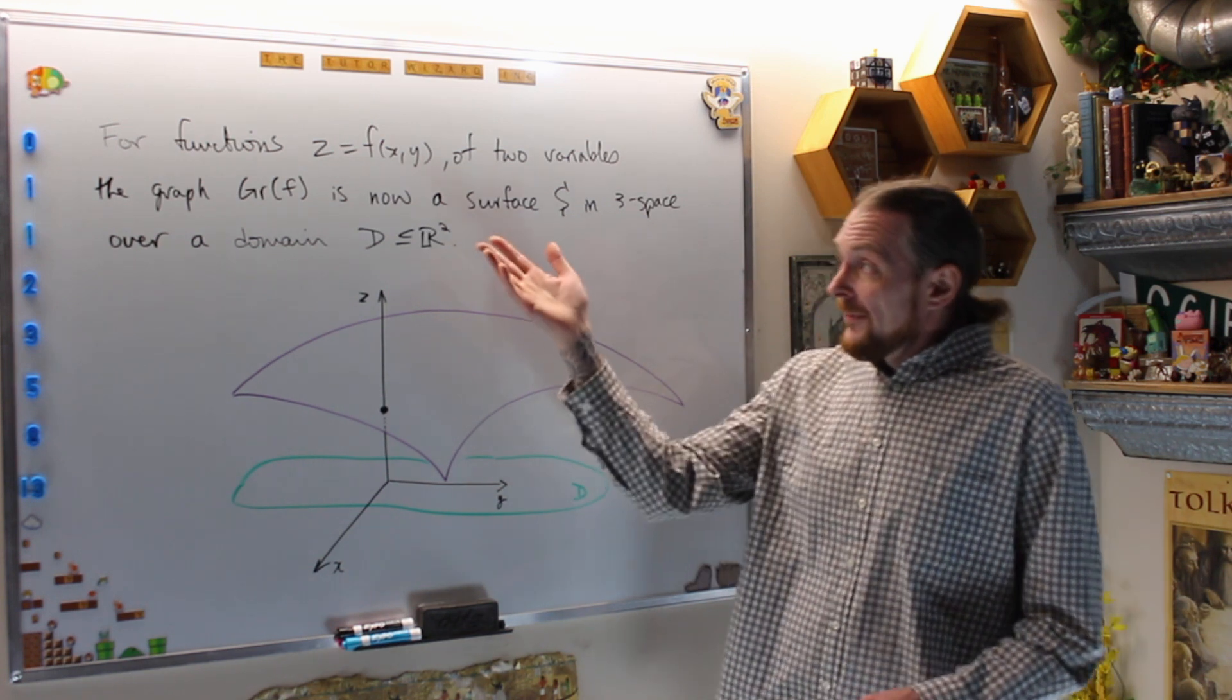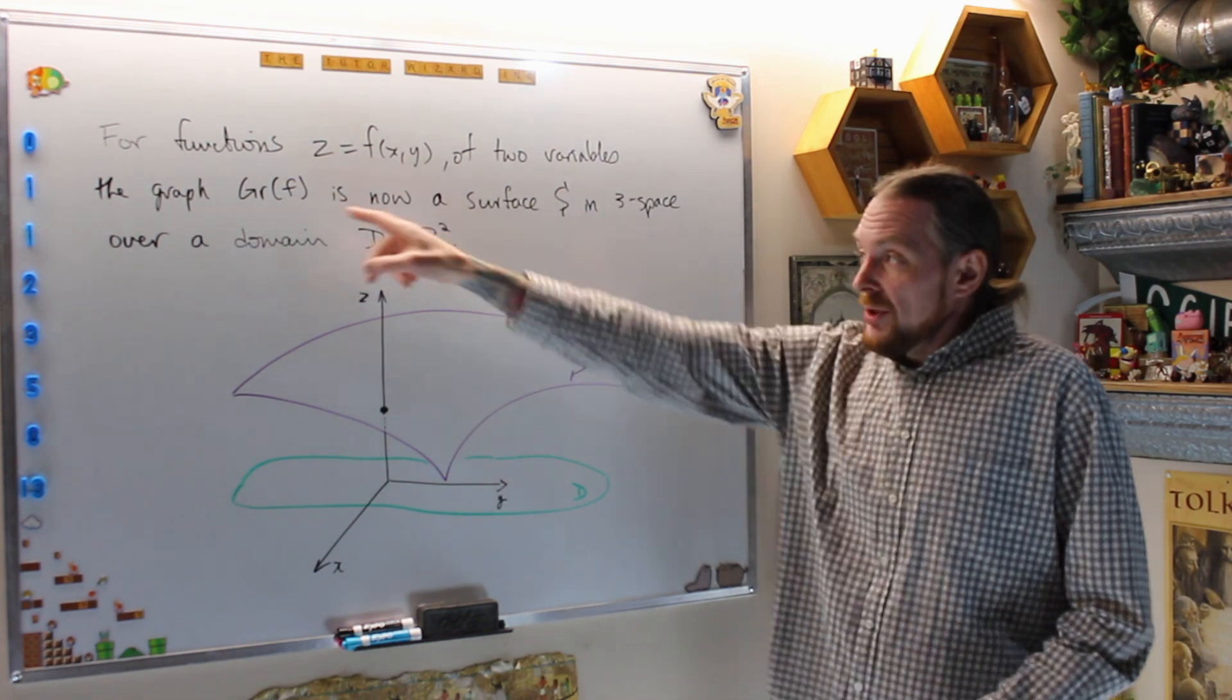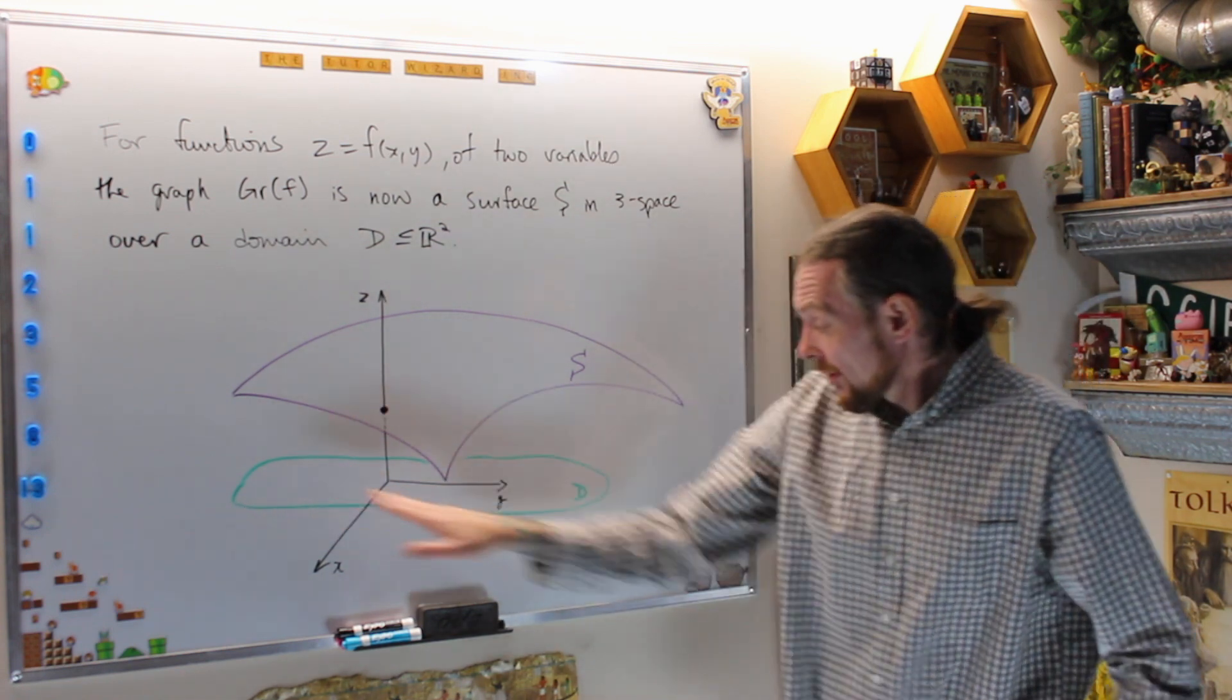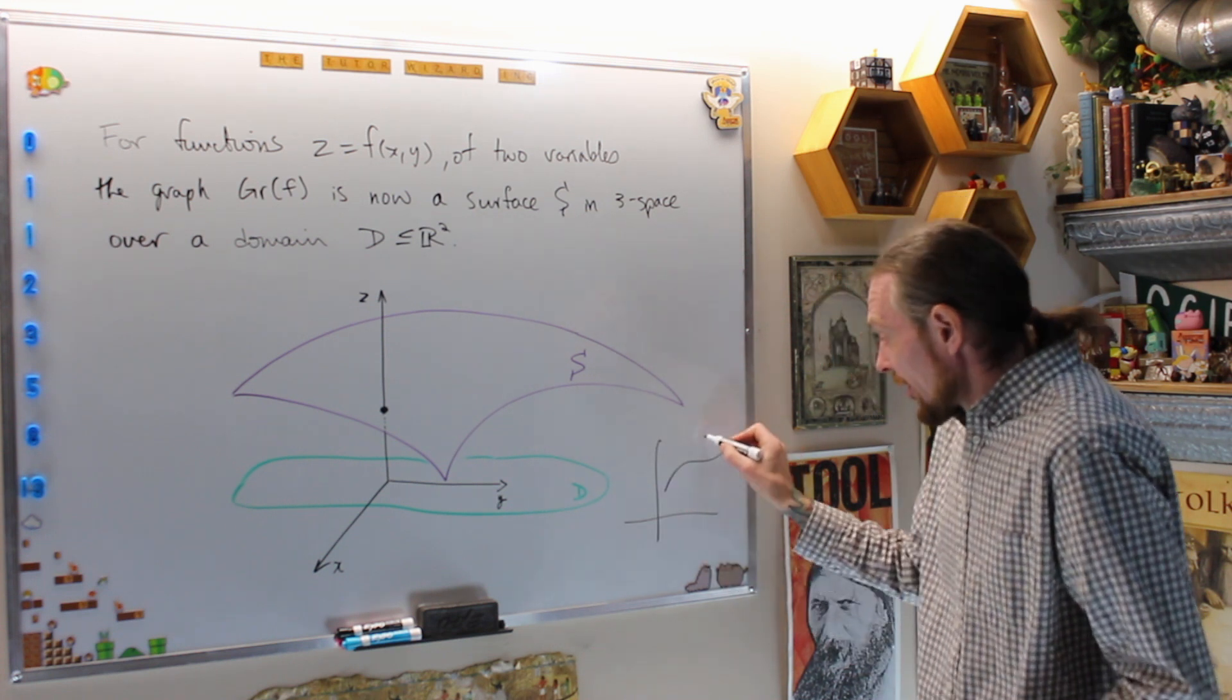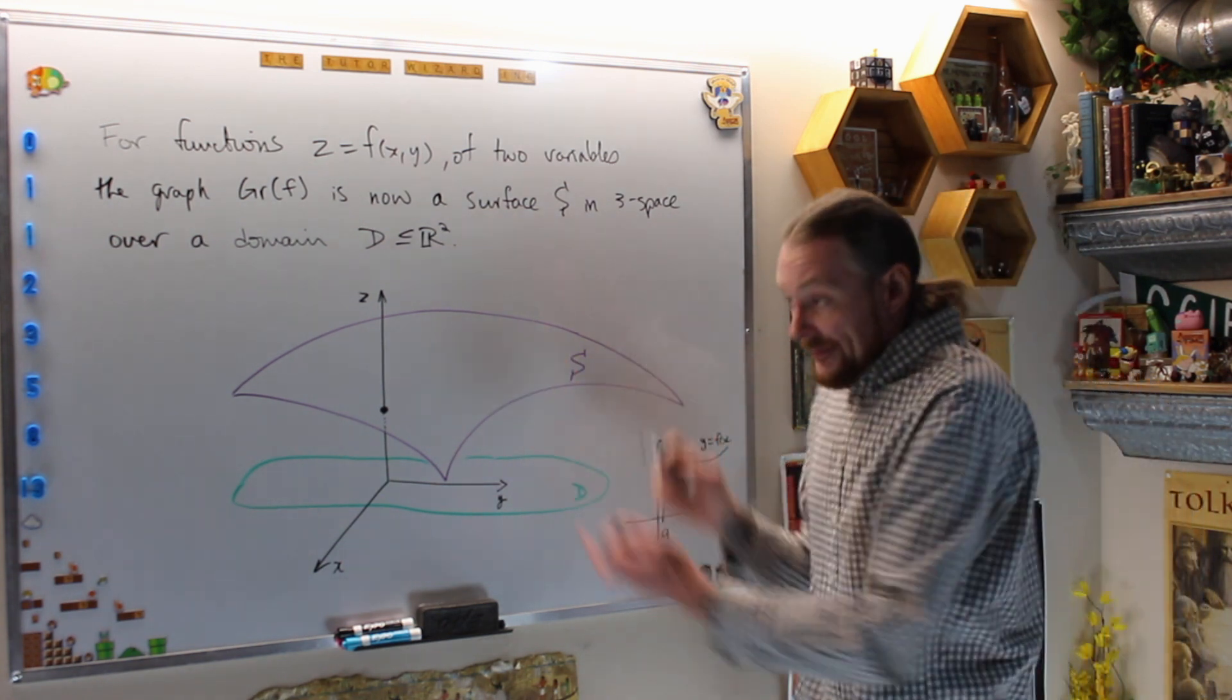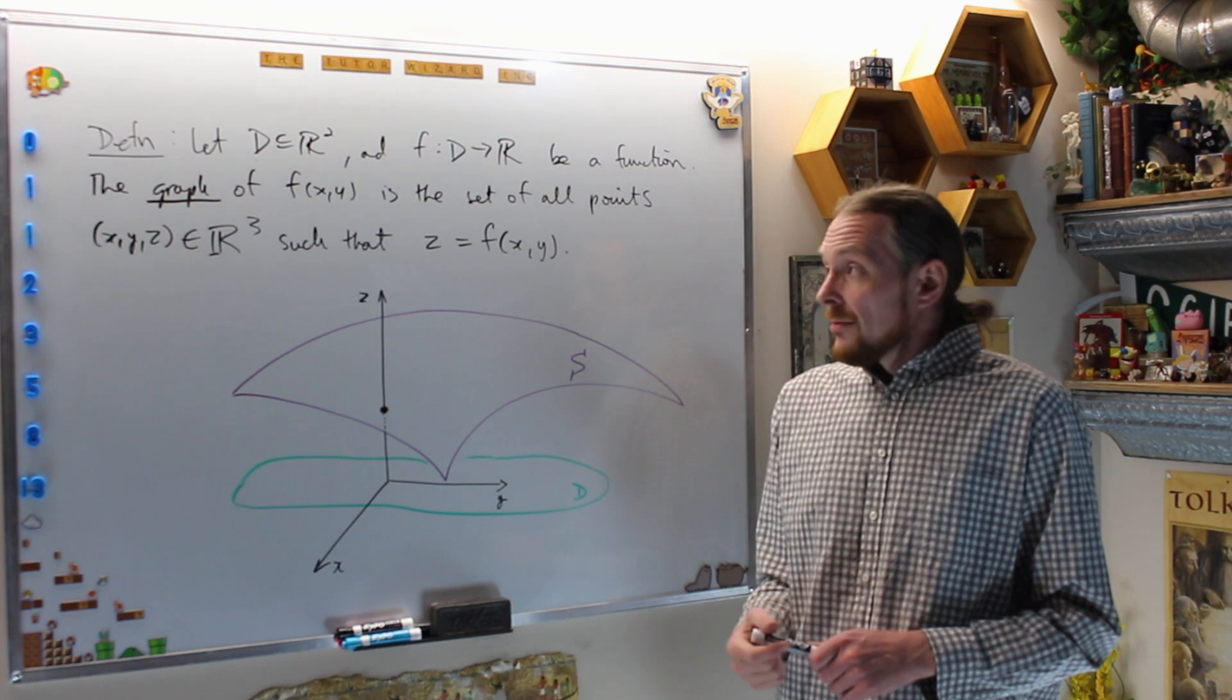For functions z equals f of xy, they're now a function of two variables. The graph of f, whatever you're going to denote this by, is now definitely a surface in three space over a domain D. Last time we would have a curve y equals f of x over an interval [a,b] in R. Now it's a surface over a domain in R², which is the plane, this xy plane.